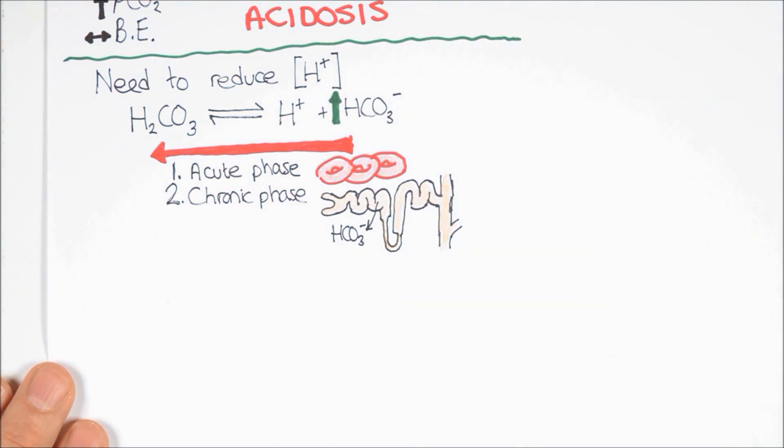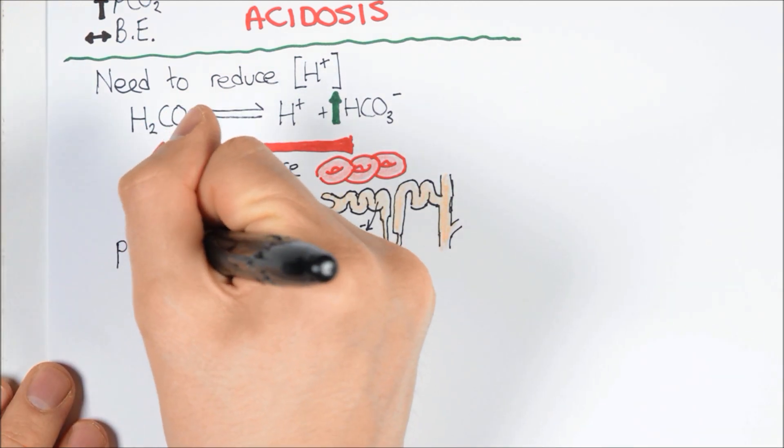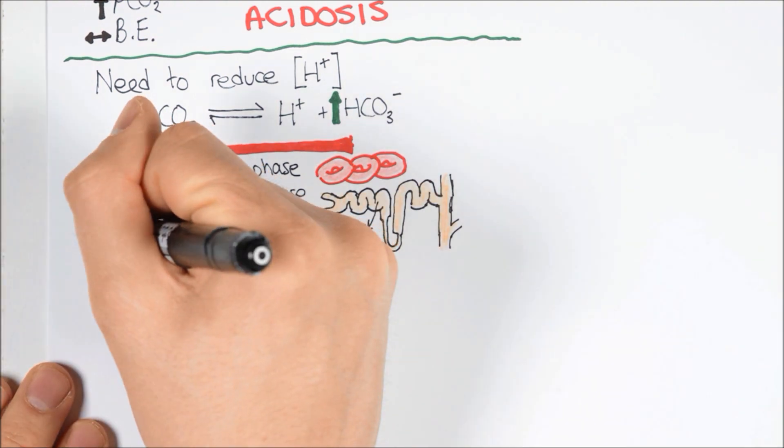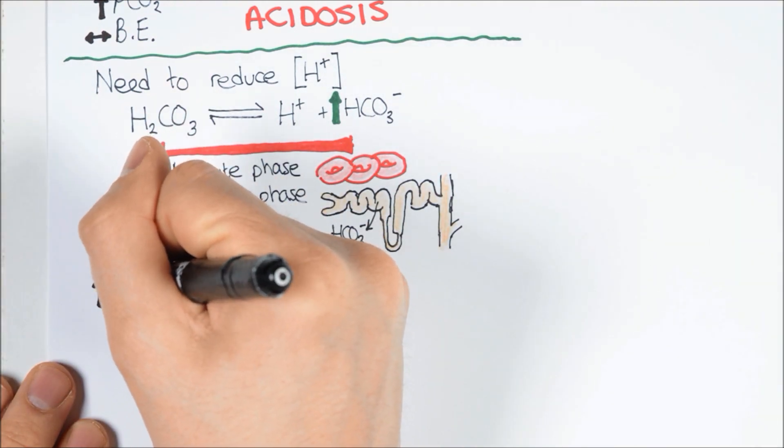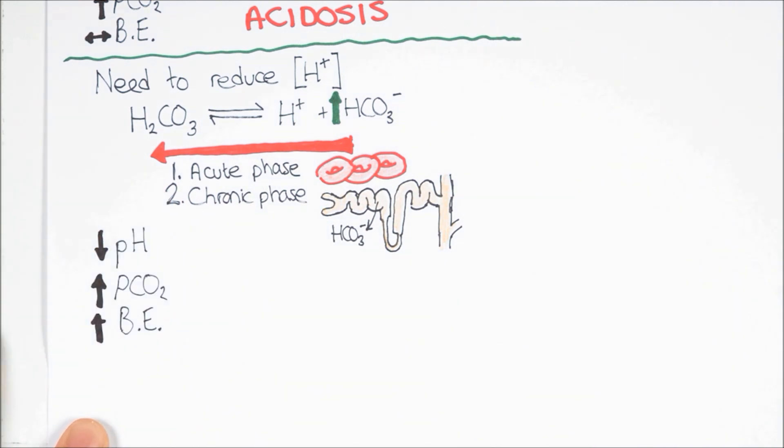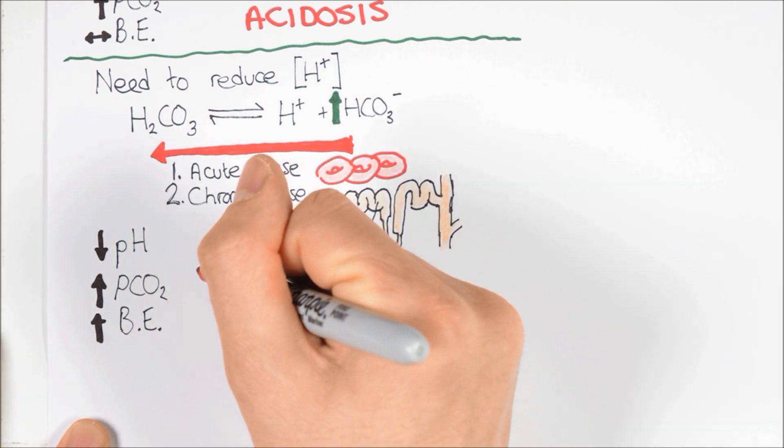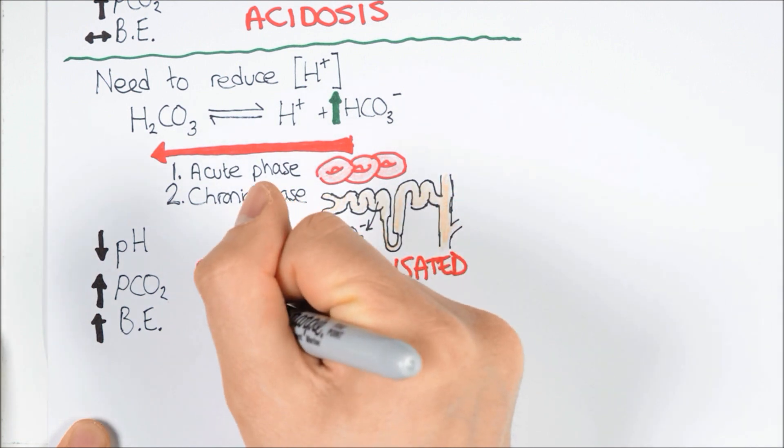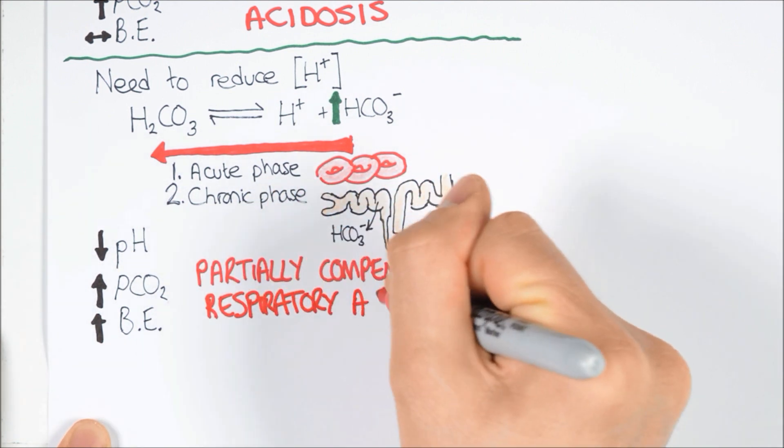Once the corrective mechanisms are in action, our blood gas would show that the pH was still low, although we would expect it to be closer to normal than before. PCO2 is still going to be unchanged, unless the breathing pattern is being corrected, and the base excess will now be high. This is because the plasma bicarbonate will be higher than expected for the PCO2. This patient could now be classified as having a partially compensated respiratory acidosis.